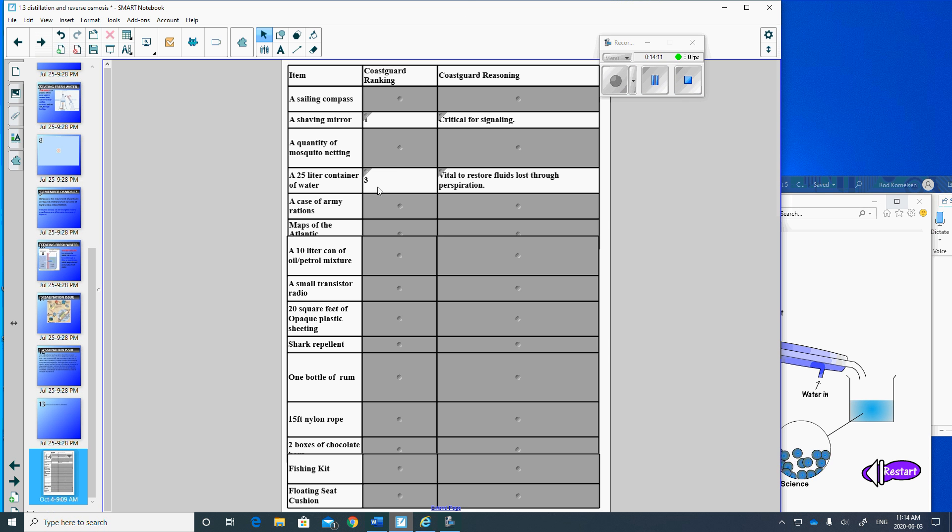Number two, the oil and gas. Again, super helpful. It floats. You can pour it on top of the water and burn it. Another signaling device. So number one, a shaving mirror. Number two, 10 liters of fuel. Number three, 25 liter can of water. Let's start at the bottom.